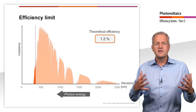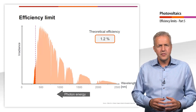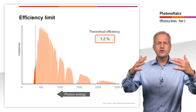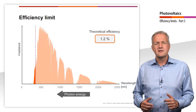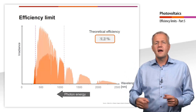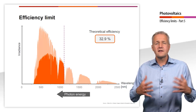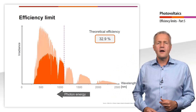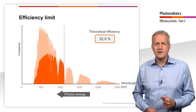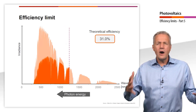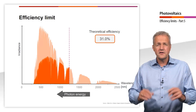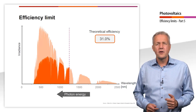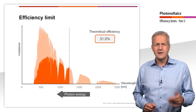The opposite is the case when we consider materials with a small band gap. Since the energy required for the photoelectric effect is now lower, more photons can contribute to the photoelectric effect. The cutoff wavelength increases and transmission losses decrease. But at the same time, the thermalization losses increase since many photons now have much more energy than they needed for the photoelectric effect. If we reduce the band gap further, the thermalization losses increase more and more. In the extreme case of a very small band gap, a large part of the energy is therefore lost as thermalization losses.